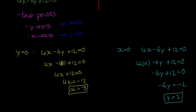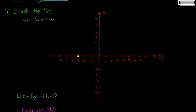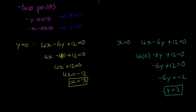So x is equal to 0 and y is equal to 2. We have this point here. So that's how we get the two points quickly.